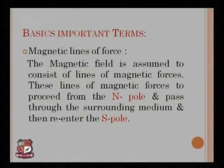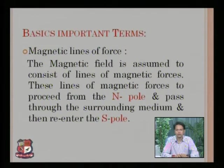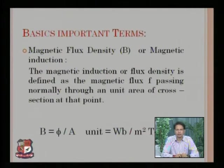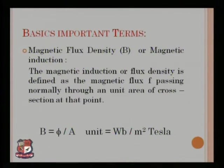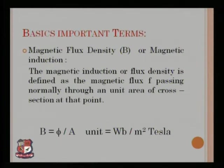The magnetic field is assumed to consist of lines of magnetic forces. These lines proceed from the north pole, pass through the surrounding medium, and then re-enter into the south pole, as observed in the diagram. The next definition is related to magnetic flux density, also described as magnetic induction. The symbol of magnetic flux density is B. It is defined as the magnetic flux F passing normally through a unit area of cross section at that point, where B equals the magnetic flux.